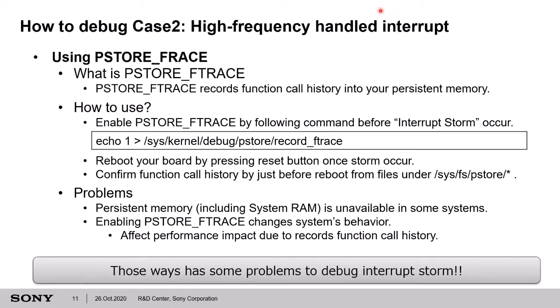But Pstore ftrace also has some problems. Persistent memory is not always available for your development board, and ftrace affects performance because ftrace records each function history in memory. As I introduced, the existing ways to debug Case 2 high-frequency handled interrupts all have some problems. But Case 1, unhandled interrupts, is easy to debug because we can use the spurious interrupt handling feature. So we decided to develop an Interrupt Storm Detection feature to resolve problems with each debug method for interrupt storm.